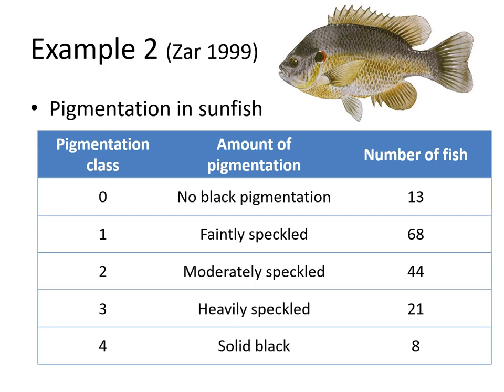Here's example two. We're looking at a freshwater fish — your sunfish — divided into different categories in terms of their pigmentation: no black pigmentation, faintly speckled, moderately speckled, heavily speckled, and solid black. If you go back to lecture one, what type of data scale is this? This is ordinal scale data because it's all relative, from no pigmentation to solid black pigmentation. Since this is ordinal, you can also assign dummy values — zero through four — to make things numerical.